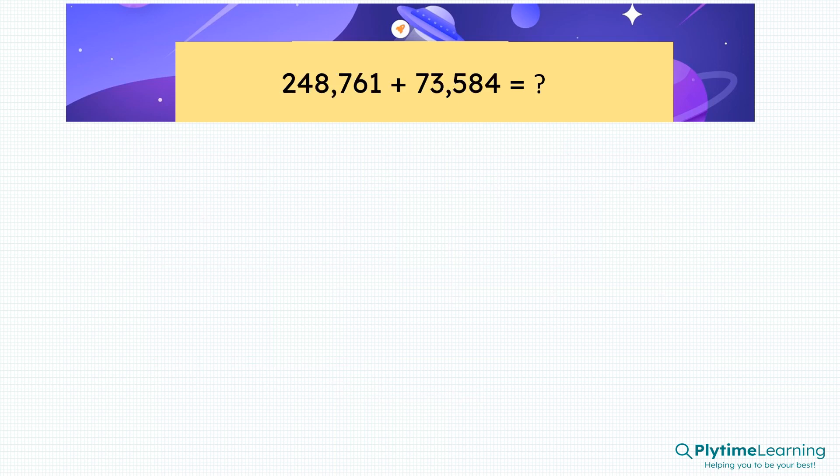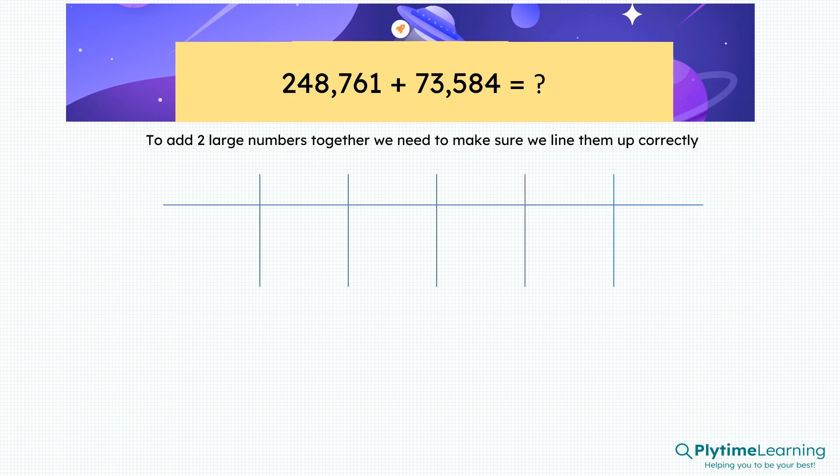What about this one? 248,761 plus 73,584. To add two large numbers together, we need to make sure we line them up correctly.